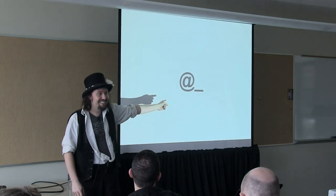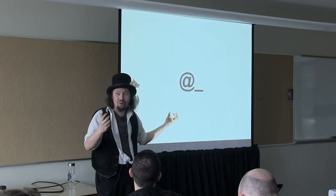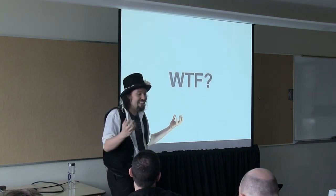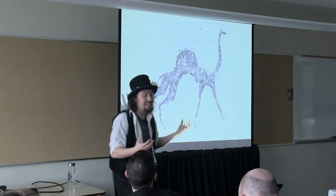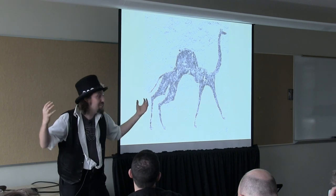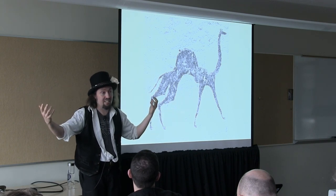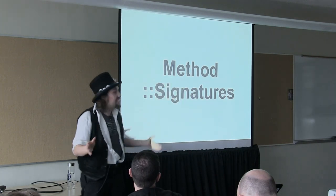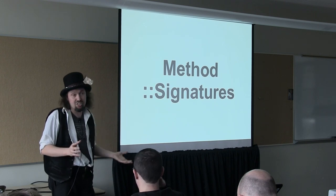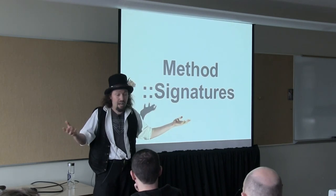Who likes the @_ variable? Every time I encounter @_ in a piece of code, I just have this rage. It's kind of like the Stone Age wants their method calling signatures back. Every other language in the world, you can say here is what I'm taking. In Perl it's like I've got a bunch of stuff, I've got to figure out what the hell is in here. I despise @_. I never want to see @_ in my code. There's this wonderful module called Method::Signatures. This is not just for writing methods — you can use it to write functions as well — but it works beautifully if you are writing methods.